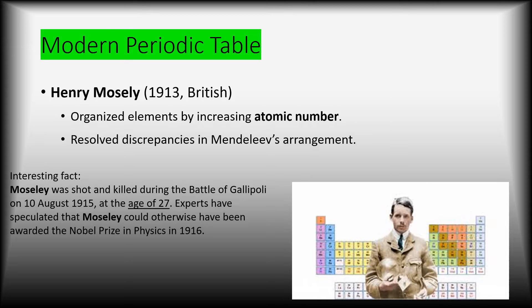So along came in 1913 a guy named Henry Mosley. Henry Mosley decided to organize the elements using increasing atomic number instead of atomic mass — he used the number of protons. When he did this, so many patterns emerged on the periodic table. It took care of almost all of the discrepancies in Mendeleev's arrangement, and it is the modern periodic table — what we use now, by Henry Mosley.